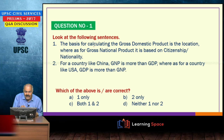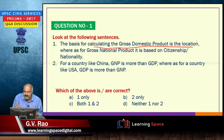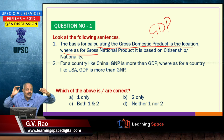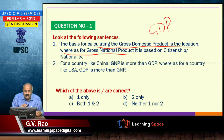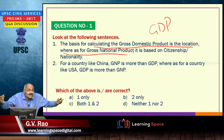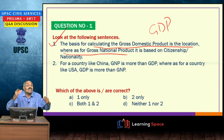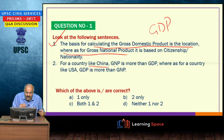The first question: the basis for calculating the gross domestic product GDP is the location or geographical boundaries of the country, whereas for gross national product GNP, it is based on the value created by its nationals. GDP is within boundaries; GNP is the value created by the nationals of the country.